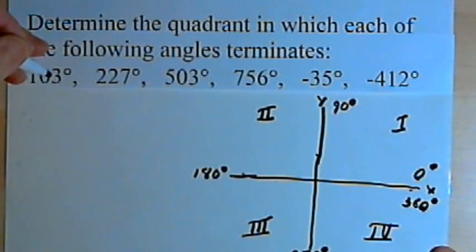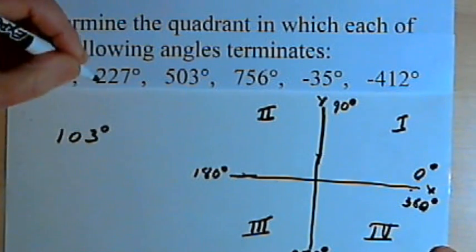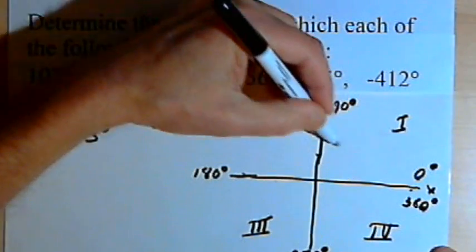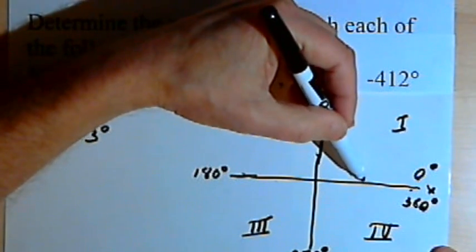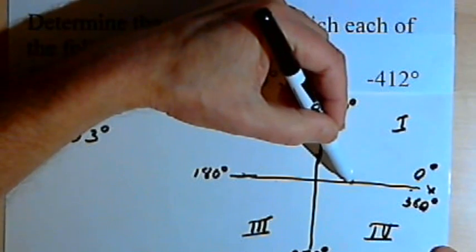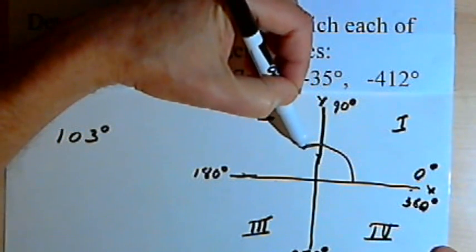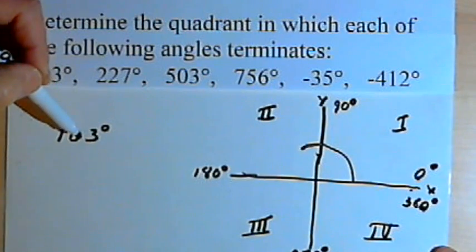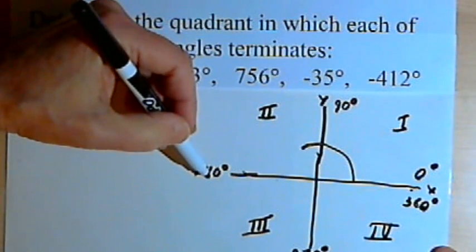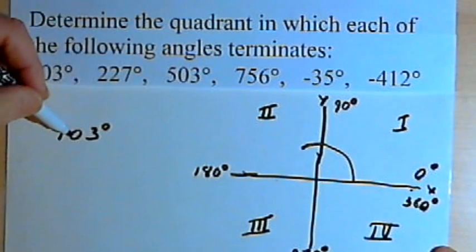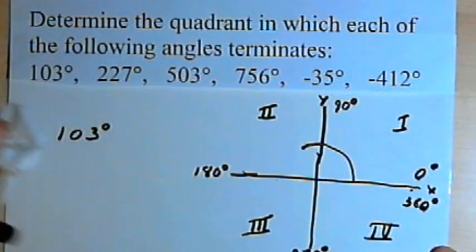If we're told we have an angle of 103 degrees, we look at the plane and say it starts at zero, goes through the first quadrant — that's the first 90 degrees — and then continues to end up at 103 degrees, which is between 90 degrees and 180 degrees. So this angle of 103 degrees would terminate in the second quadrant.